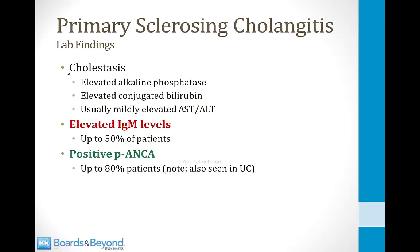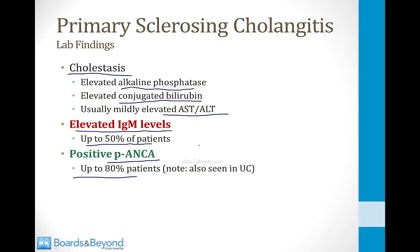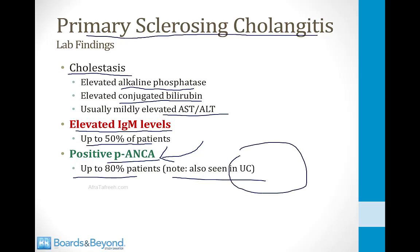The lab findings include evidence of cholestasis: an increased alkaline phosphatase level, elevated conjugated bilirubin, and usually mild increases in AST and ALT. One characteristic is elevated IgM levels — up to half of patients will have a high IgM level. There is also an association between P-ANCA antibody and sclerosing cholangitis; up to 80% of patients are positive for P-ANCA. This is easy to remember because P-ANCA is also associated with ulcerative colitis, and this disorder can largely be thought of as a complication of ulcerative colitis.